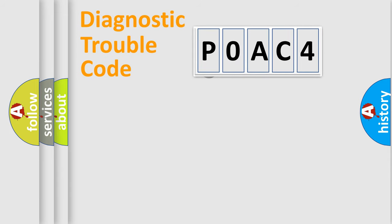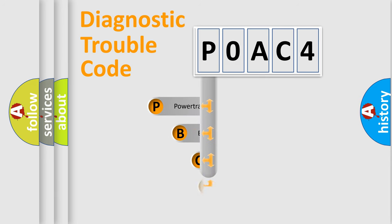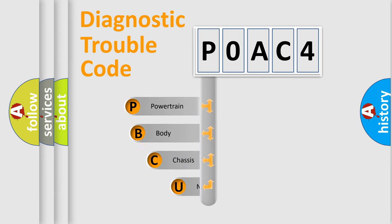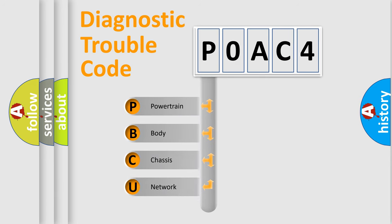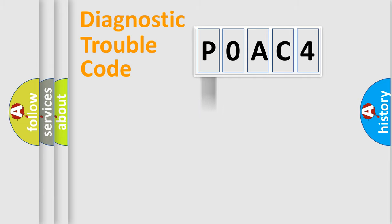First, let's look at the history of diagnostic fault code composition according to the OBD2 protocol, which is unified for all automakers since 2000. We divide the electric system of an automobile into four basic units: Powertrain, Body, Chassis, and Network. This distribution is defined in the first character of the code.